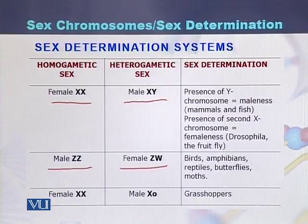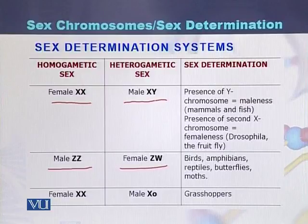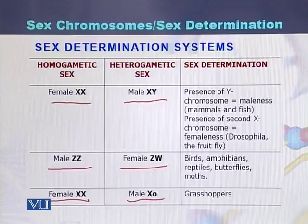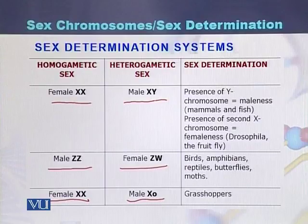The third sex determination system is found in the grasshopper, where the female is homogametic and is XX, while the male is X-naught, meaning there is only one X chromosome. If there is only one X chromosome, the grasshopper will be male. If there are two X chromosomes, the grasshopper will be female.